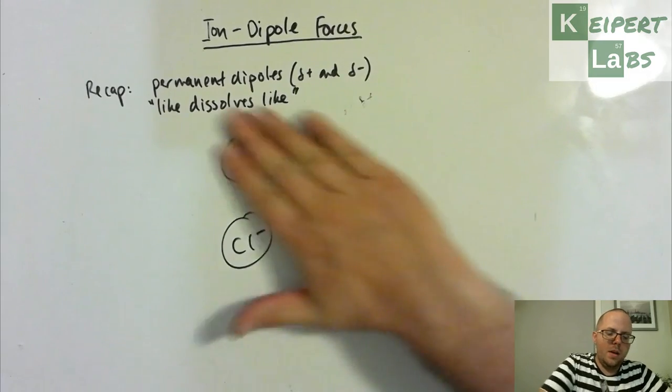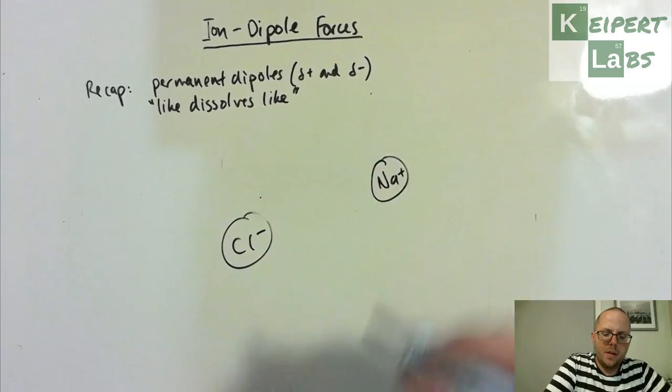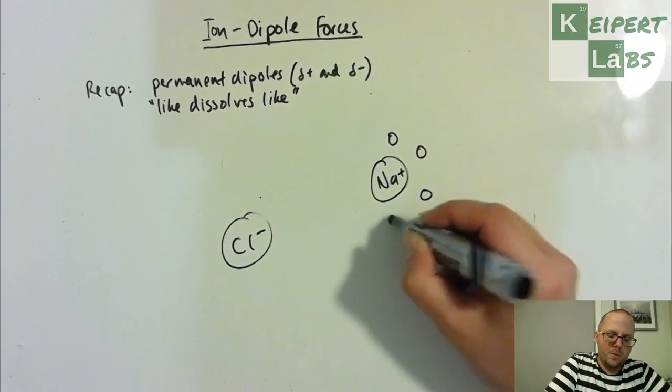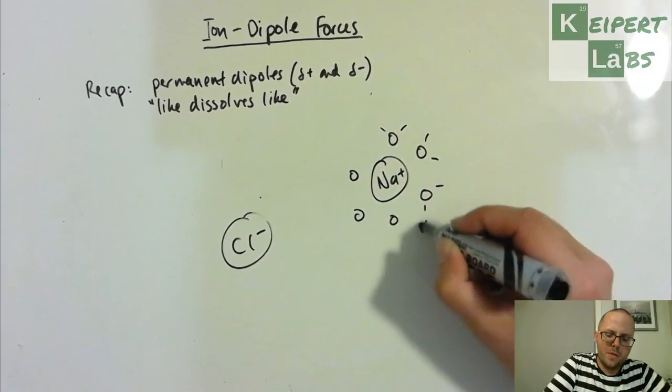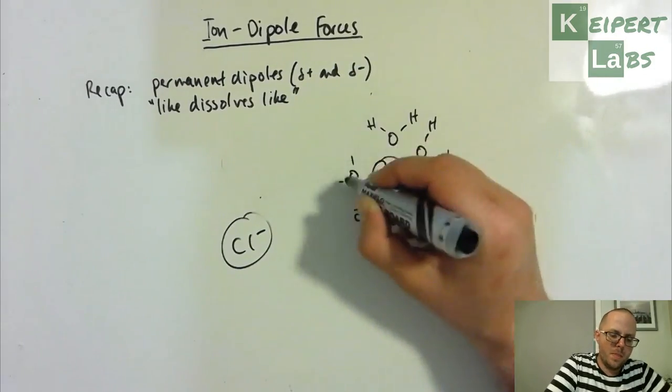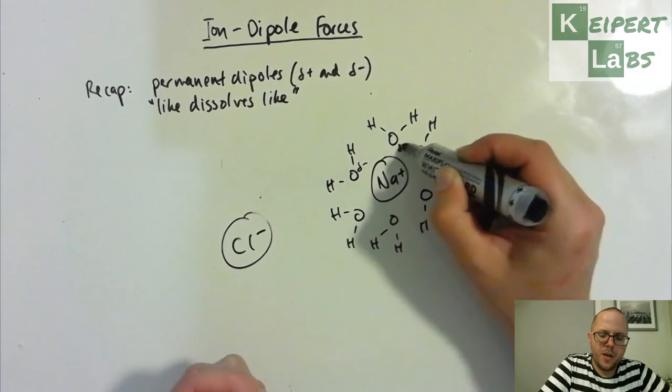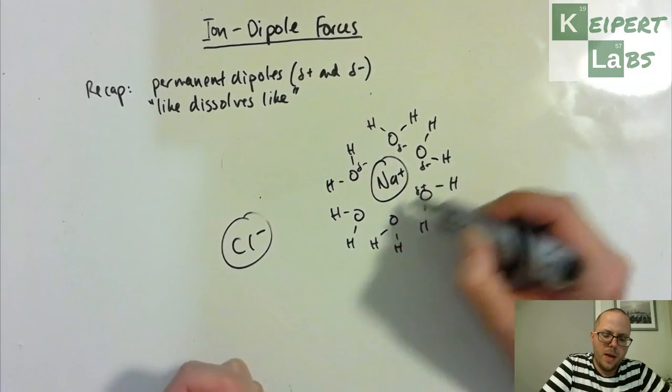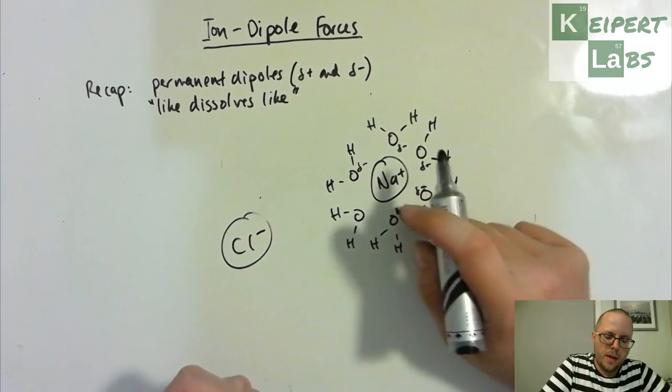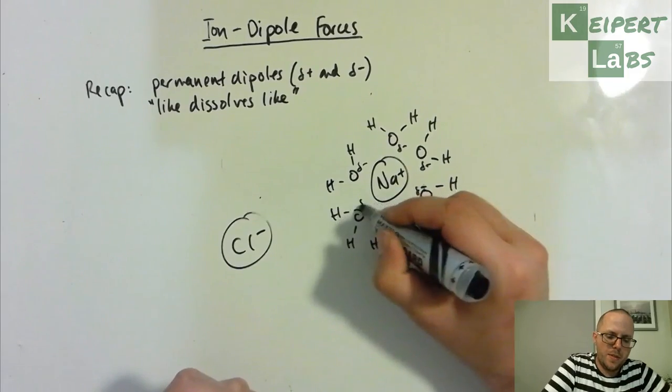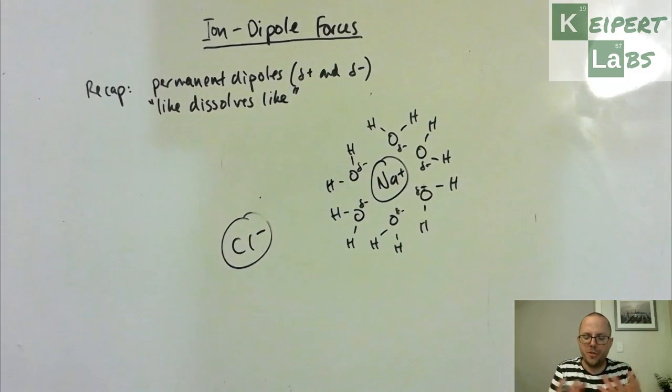And so then, if we look at this sodium ion here, we end up with water molecules that surround this sodium. And so that each of the negatively charged oxygens is pointing towards it and the positively charged hydrogens are pointing away. So they're being repelled, whereas the oxygens are being attracted.